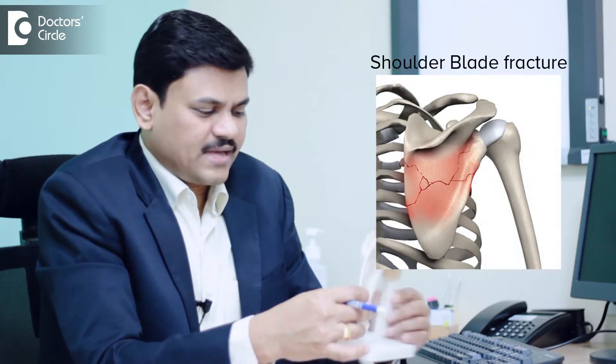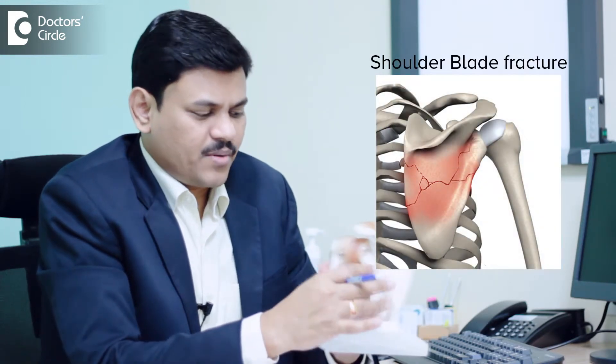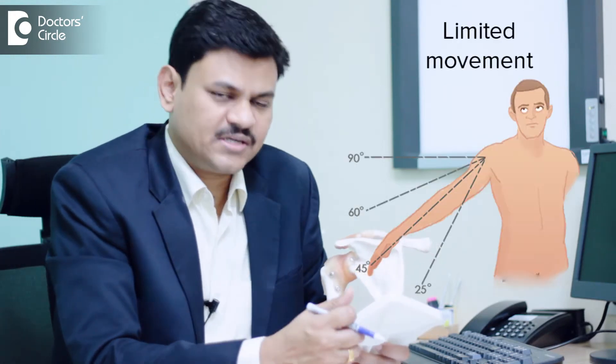Shoulder blade fractures are not uncommon but they many a times go unrecognized or are left untreated. The shoulder blade provides attachment to many of the important muscles surrounding the shoulder joint which gives function to the shoulder joint. If the shoulder bone is broken it tends to displace in different directions because of the muscles attached to it. If they are not reduced into normal position there can be limitation of movement, stiffness of the shoulder joint or the strength of these muscles will come down.